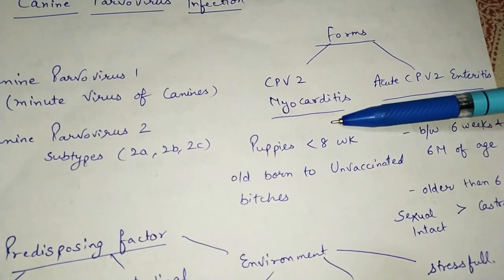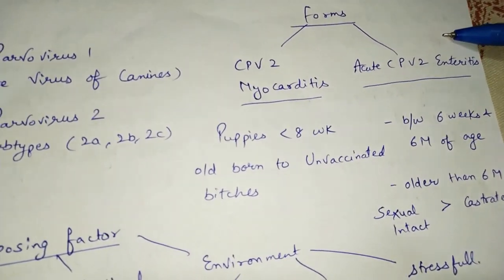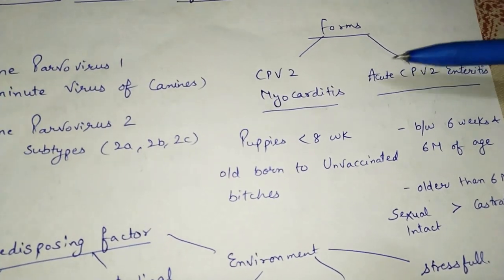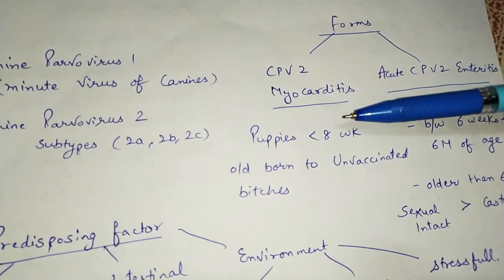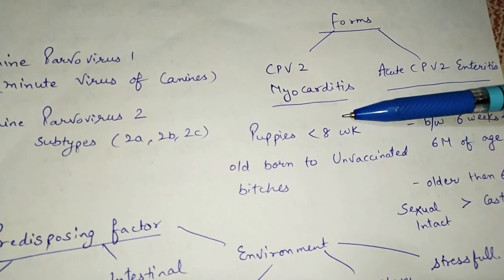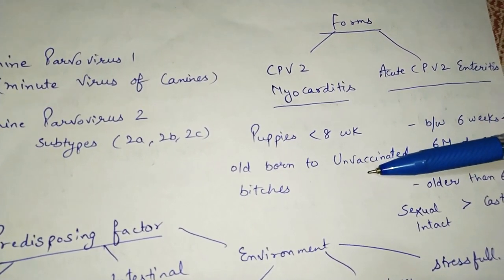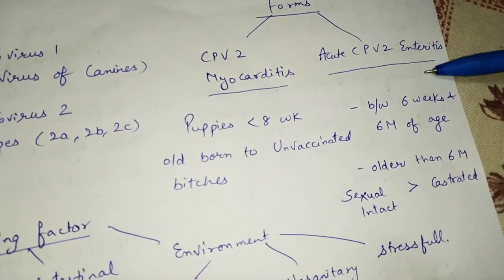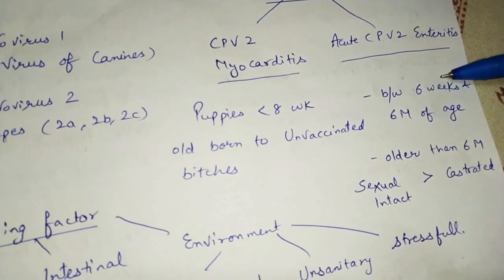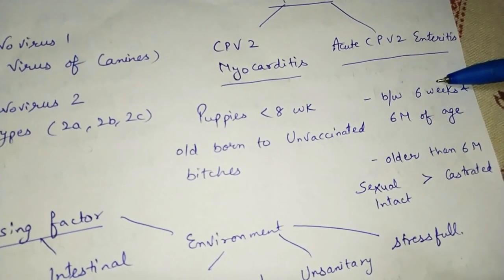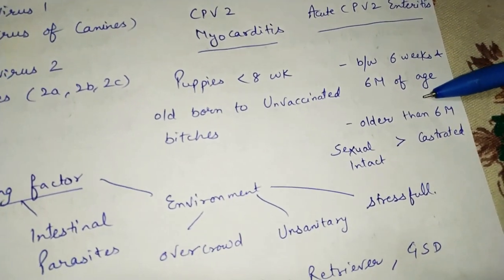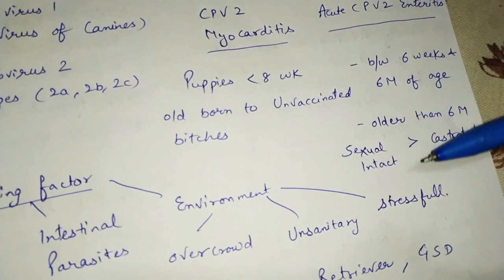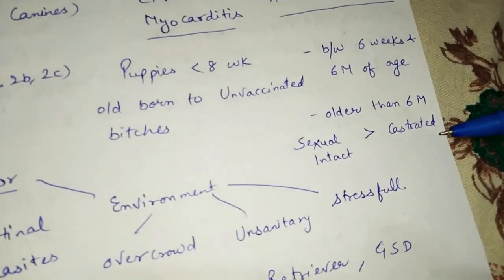Canine parvovirus 2 occurs in two forms: the myocarditis form and the acute enteritis form. The myocarditis form occurs in puppies less than eight weeks old born to unvaccinated bitches. The enteritis form occurs between six weeks to six months of age. Dogs older than six months that are sexually intact are more susceptible than castrated ones.